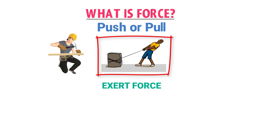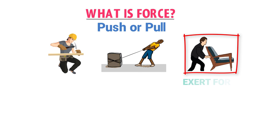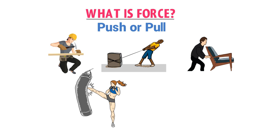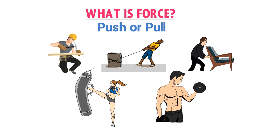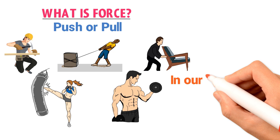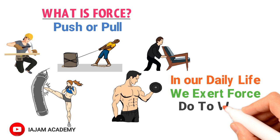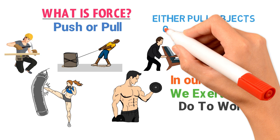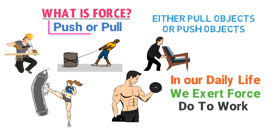Pushing a chair — when you push this chair, you exert force on it, and as a result the chair is moving. Kicking something — when you kick this punching bag, you exert force on it. Lifting something above the Earth's surface — when you lift this dumbbell or rod above the Earth's surface, you exert force on it. From all these examples, we learn that in our daily life we exert force on different objects to do different types of work. We either pull objects or push objects. Therefore, we define force as a push or pull.